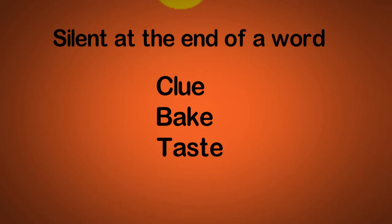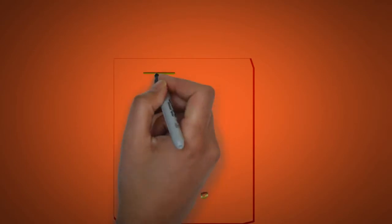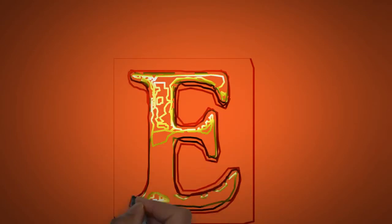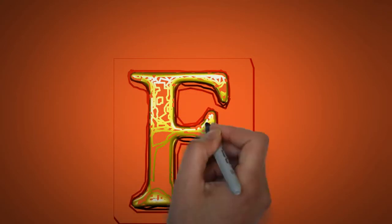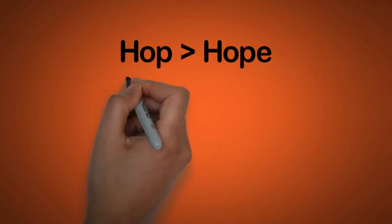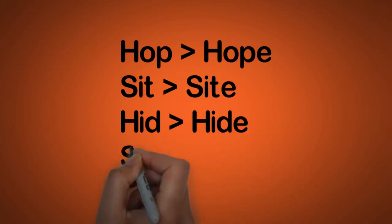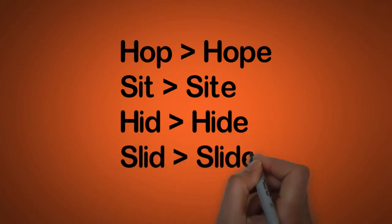But that E at the end, although it might be silent, it can affect the pronunciation of the vowel sound before it. Let's look at these examples: hop, hope; sit, sight; hid, hide; slid, slide.